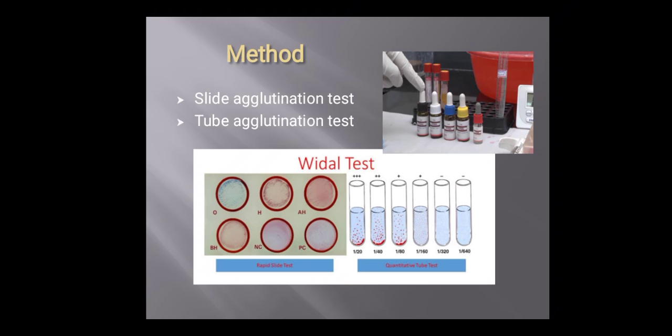Place one drop of the control onto a reaction circle on the last circle marked as O, and then place 50 microliters of normal saline onto the next reaction circle marked as negative control.